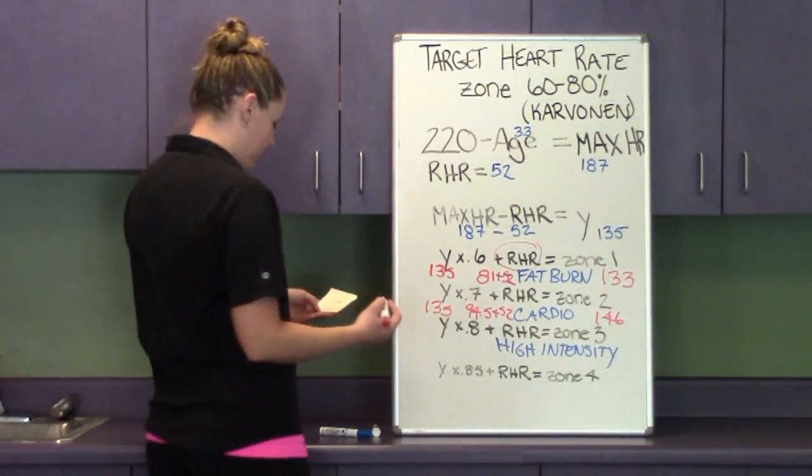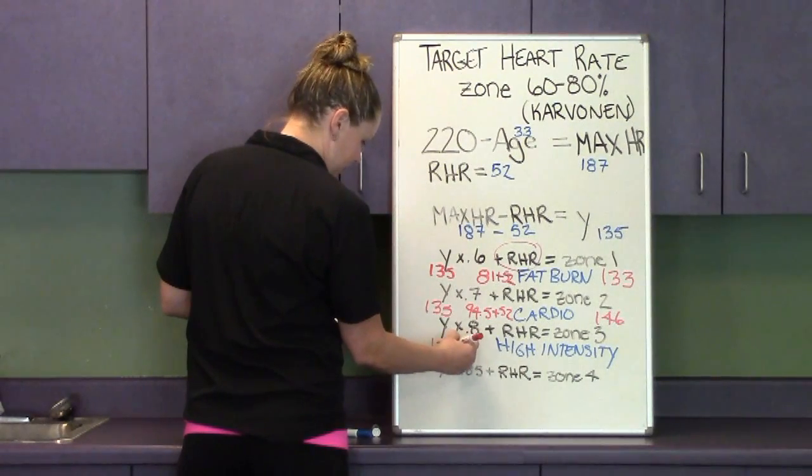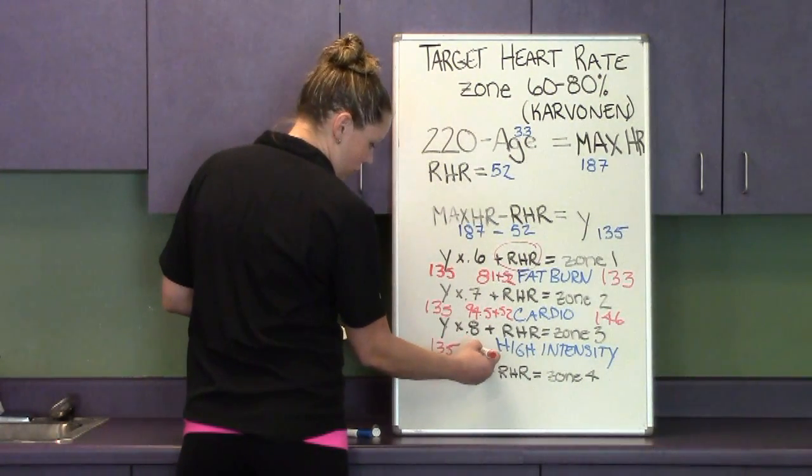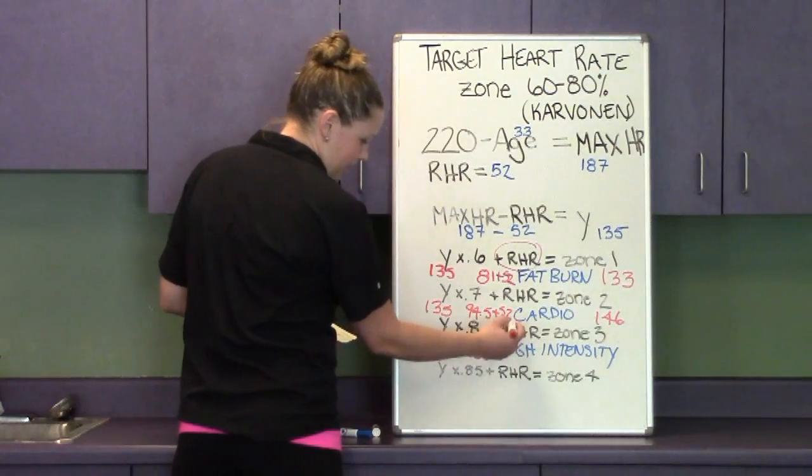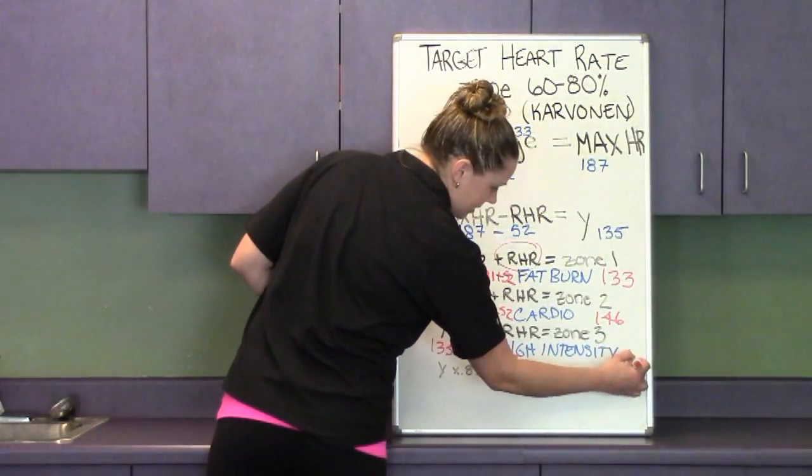Zone 3, which is 80%, I'm going to take my 135 times 80% and get 108. Adding back in my resting heart rate, and I'm going to get 160.